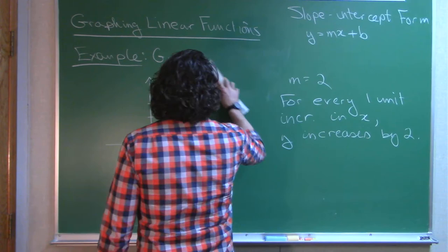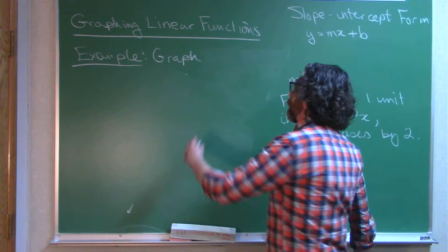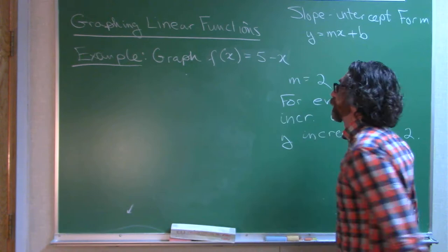Let's do a couple more examples just to make sure we get the hang of everything. Let's try this one. Graph f(x) = 5 - x.